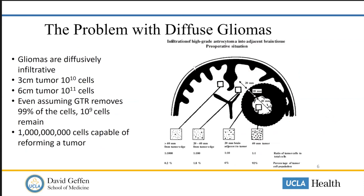Why is that? The problem with diffuse gliomas is that they're an infiltrative disease. Even though they look circumscribed on an MRI, malignant cells, even at the time of presentation, can extend well beyond anything we can see on MRI and often into the contralateral hemisphere. The high-grade central area we see on MRI — the necrotic center and its contrast enhancement — does contain the highest number of malignant cells.